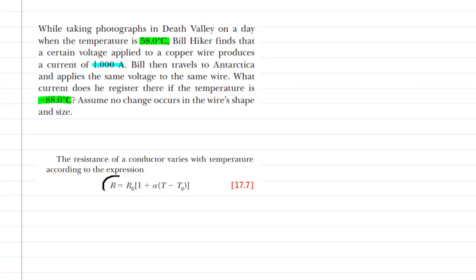We have written down the equation that gives us resistance as a function of temperature. We've also learned in this chapter Ohm's Law, which tells us that the potential difference applied across the wire equals the current traveling through the wire multiplied by the resistance of that wire.